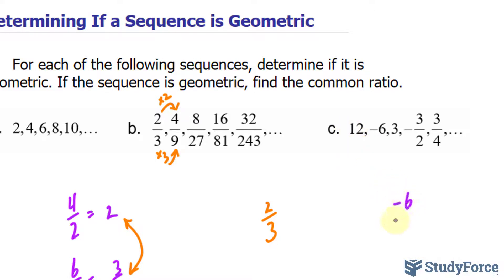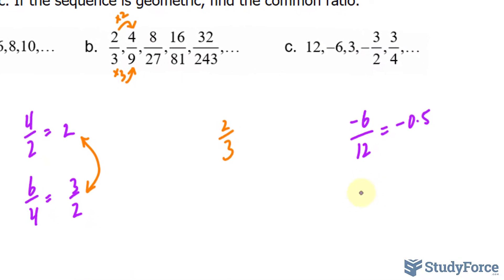Well, I can always take negative 6 and divide it by 12. I end up with negative 0.5. If I take negative 6 and multiply it to negative 0.5 and I get 3, then this is a geometric sequence. And as you can tell, multiplying negative 6 times negative 0.5 does give us positive 3.